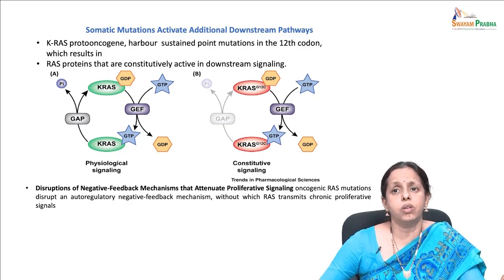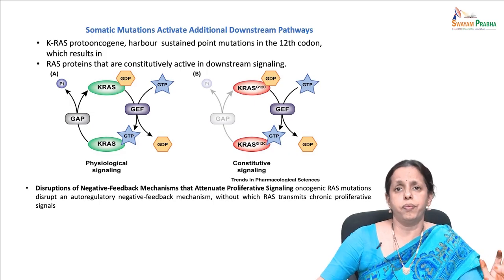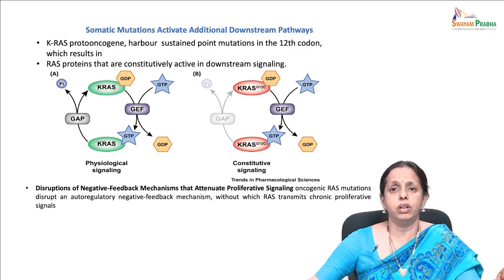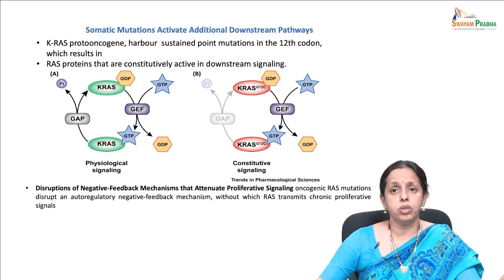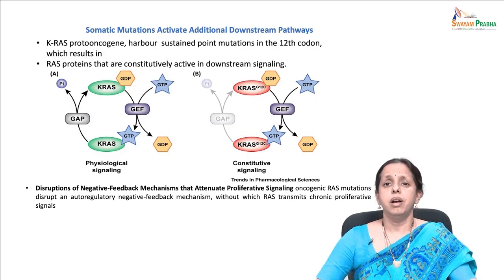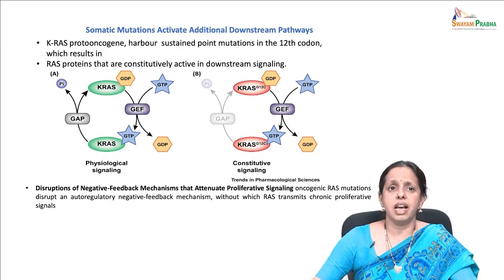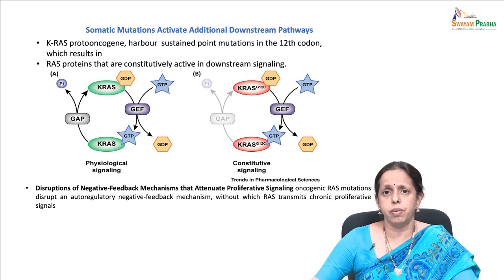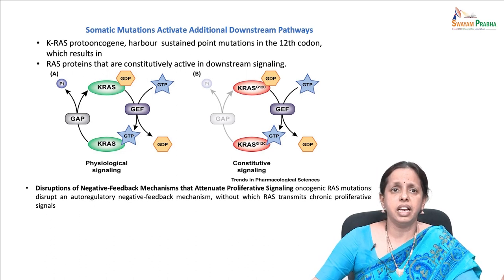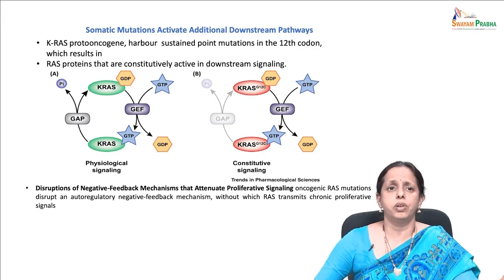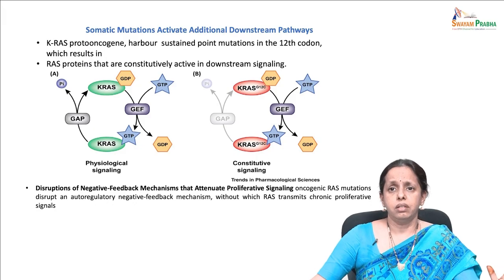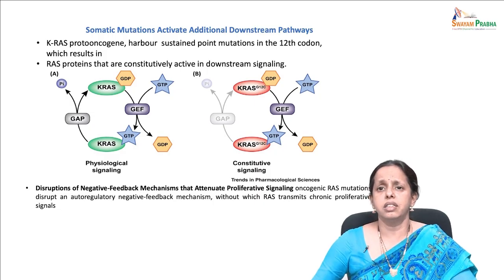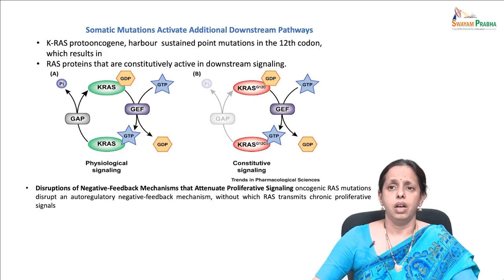The involvement of mutant RAS oncogenes varies dramatically from one tumor type to another. In pancreatic adenocarcinomas, more than 90% of the tumors carry KRAS mutant alleles. KRAS normally cycles between the active GTP-bound and inactive GDP-bound state as previously discussed. The activity of GDP exchange factors and GTPase-activating proteins (GAPs) plays a role to ensure proper physiological signal transduction downstream of growth factor receptors.